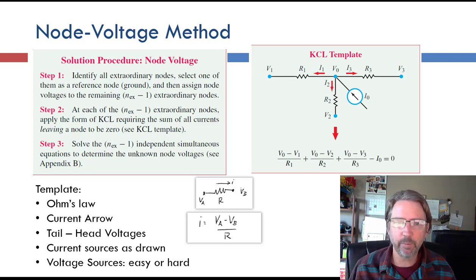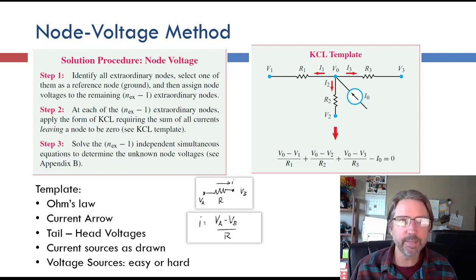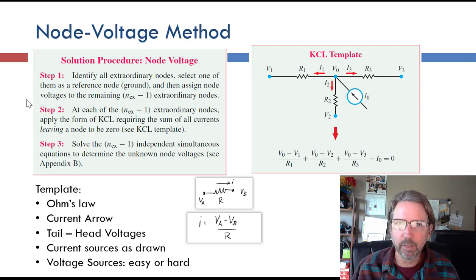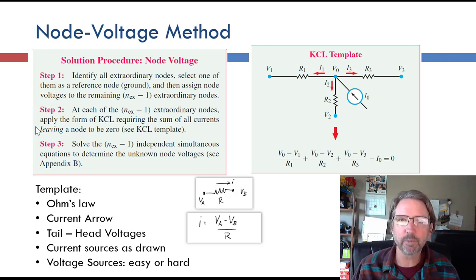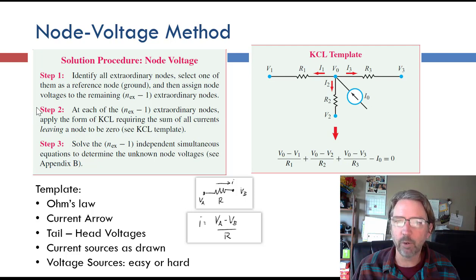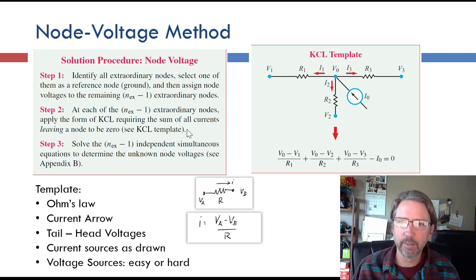Hello! Today we are going to continue our look at the node voltage method, or node analysis, and do some examples. Remember it's a roughly three-step procedure: first, set up all of the unknowns, defining and labeling them. Then for each unknown node voltage, use Kirchhoff's current law (KCL) and write that equation for the node. Then combine with Ohm's law to get one equation per unknown node voltage. Finally, solve the set of equations.